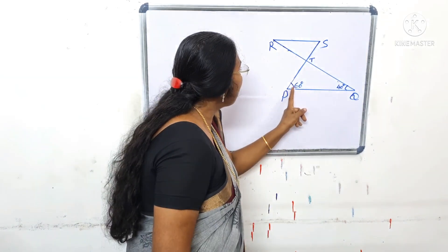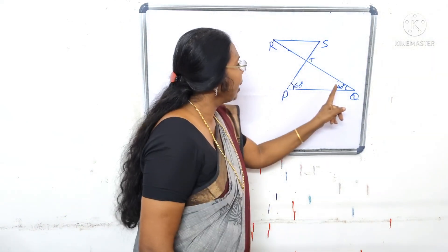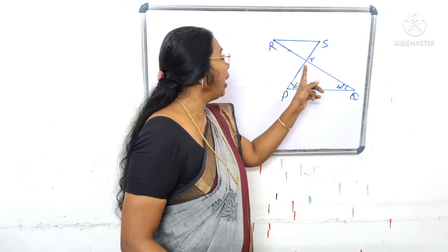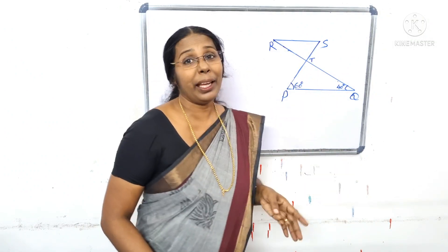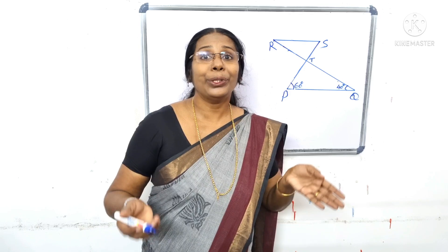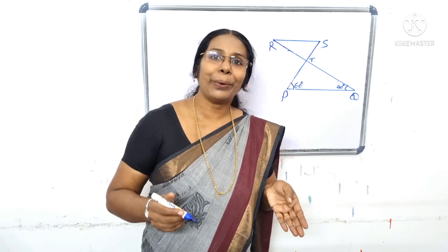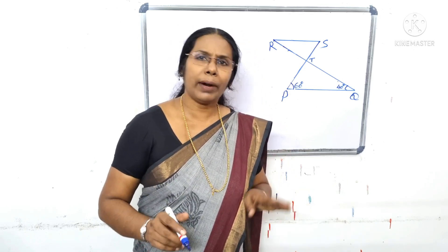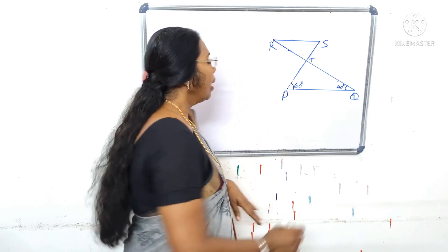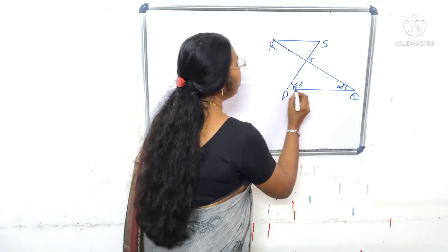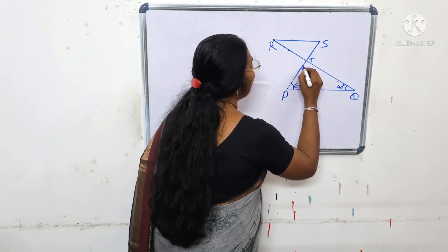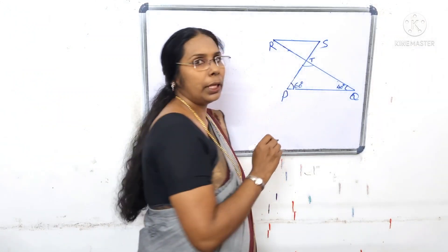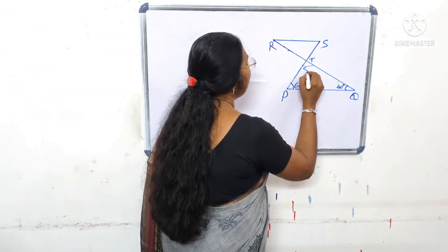Look at this — this is 60 degrees and this is 40 degrees. We can use the sum of angles in a triangle. How many degrees? 60, 60 degrees. In this case it is 80 degrees.